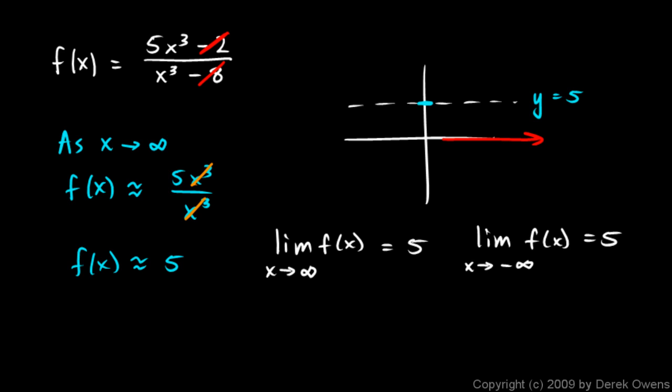That's how we use limit notation to express horizontal asymptotes. This function also has a vertical asymptote. A vertical asymptote occurs where the denominator is 0. If we put in x = 2, we would have a 0 denominator. So there's a vertical asymptote at x = 2.